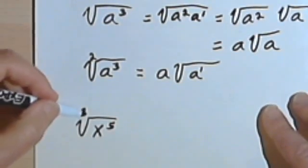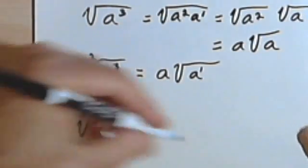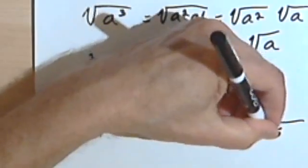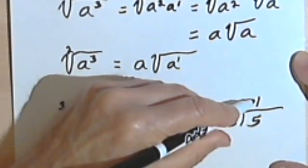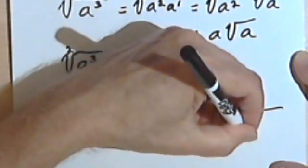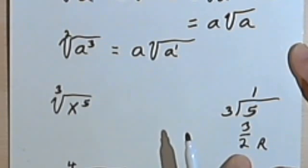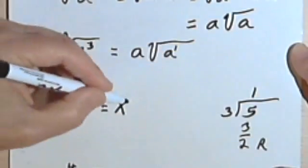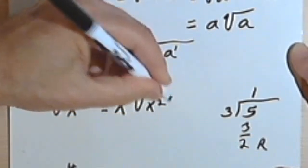Let's look at another example. I've got the third root of x to the fifth. I'll do my division like long division: divide the index into the exponent, so I'm dividing 3 into 5. 3 into 5 goes one time — that's the exponent outside the radical. 1 times 3 is 3; subtracting, my remainder is 2 — that's the exponent under the radical. So this becomes x to the first times the third root of x squared.